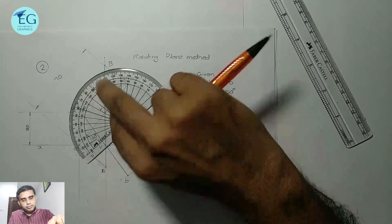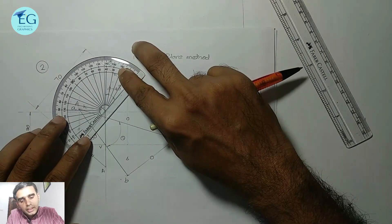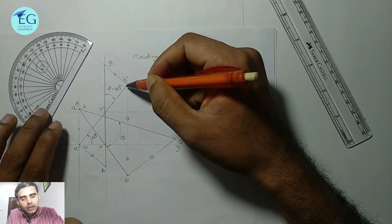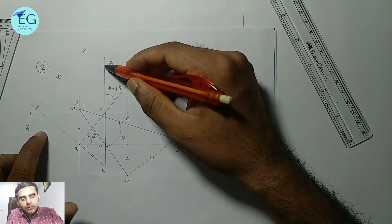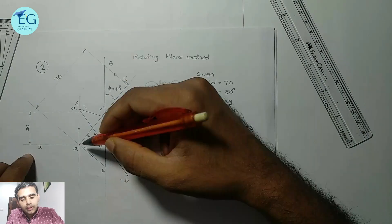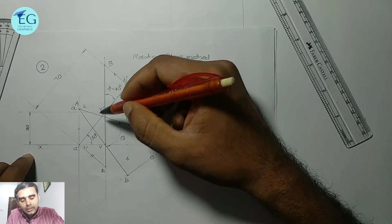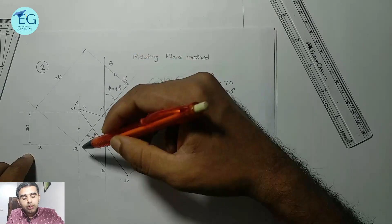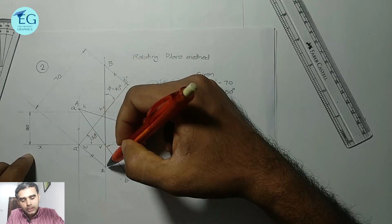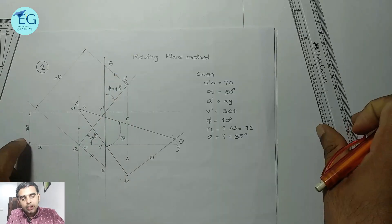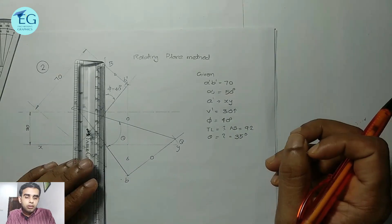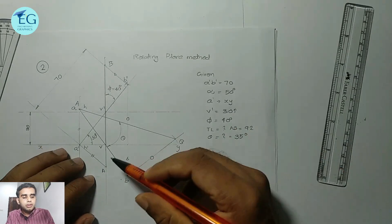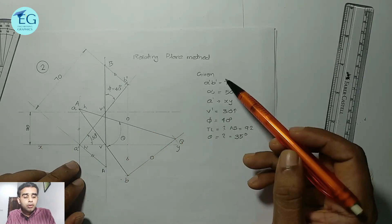Extend V' along the perpendicular line. B' is in the perpendicular line. B' goes in the same direction as the first quadrant. This gives the true length as approximately 92 mm. That is the result from the rotating plane method.